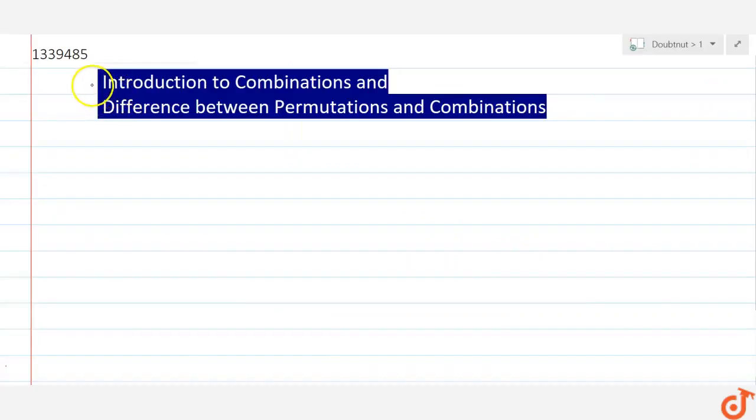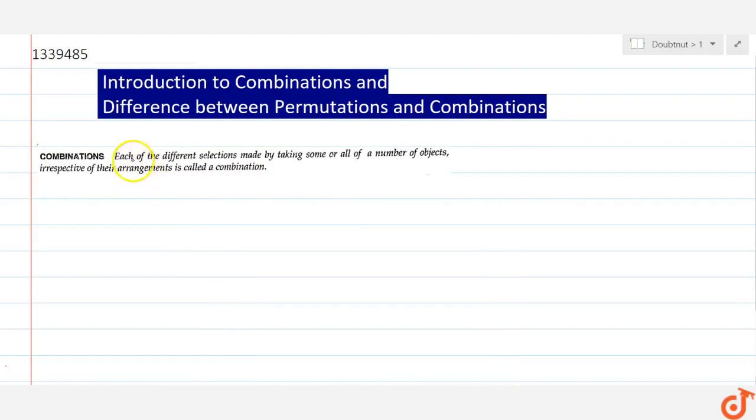Hello friends, in this video we will know what is the combination and what is the difference between the permutation and the combination. First of all, let's look at the definition of combination. Each of the different selections made by taking some or all of a number of objects, irrespective of their arrangement, is called a combination.